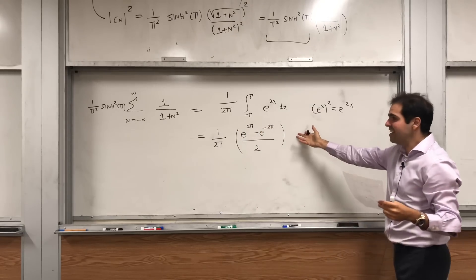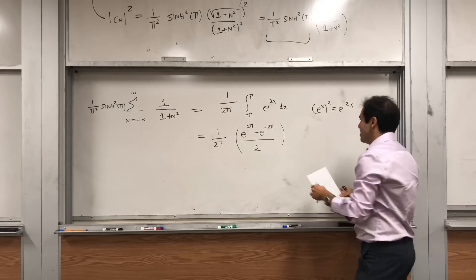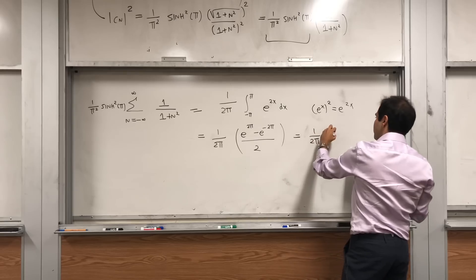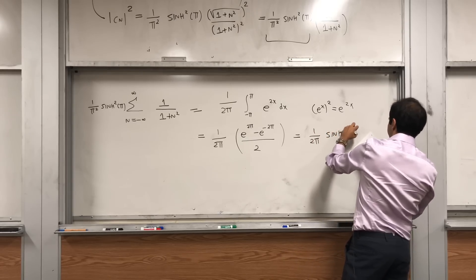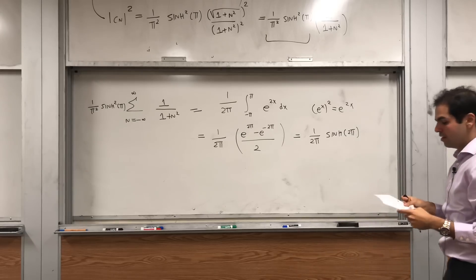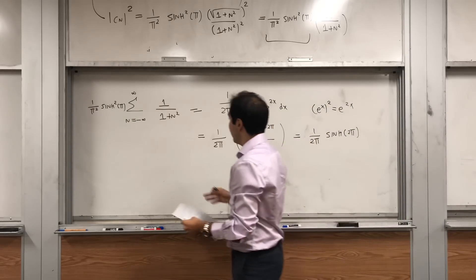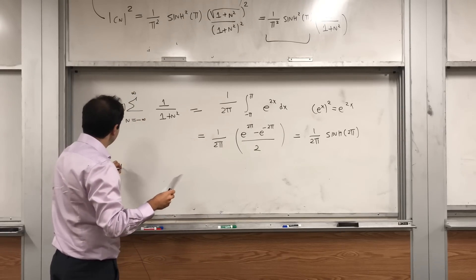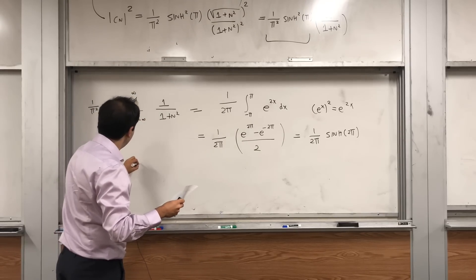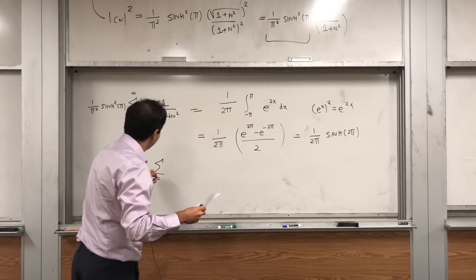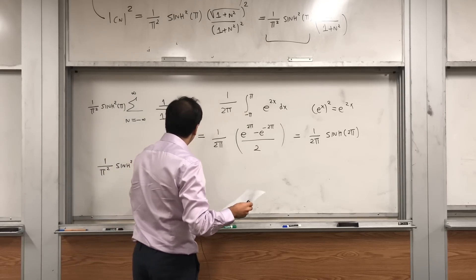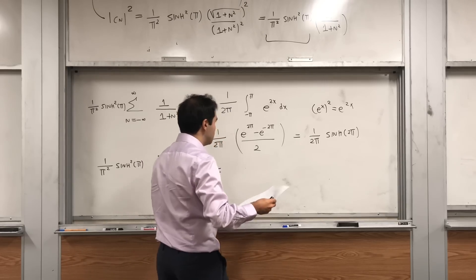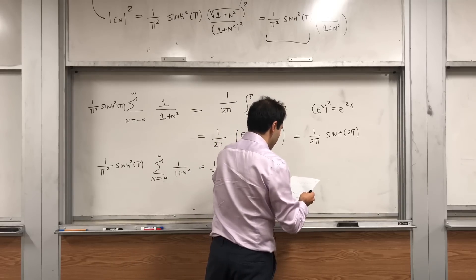We can write that in terms of sinh: it becomes 1 over 2 pi times sinh of 2 pi. So putting it all together, 1 over pi squared times sinh squared of pi times the sum from n equals minus infinity to infinity of 1 over (1 plus n squared) equals 1 over 2 pi times sinh of 2 pi.